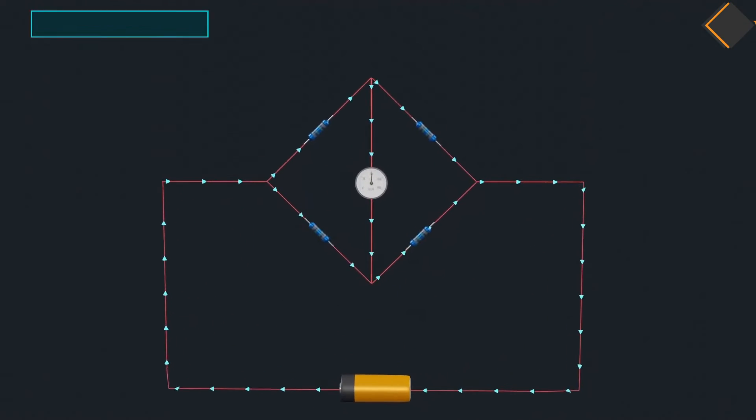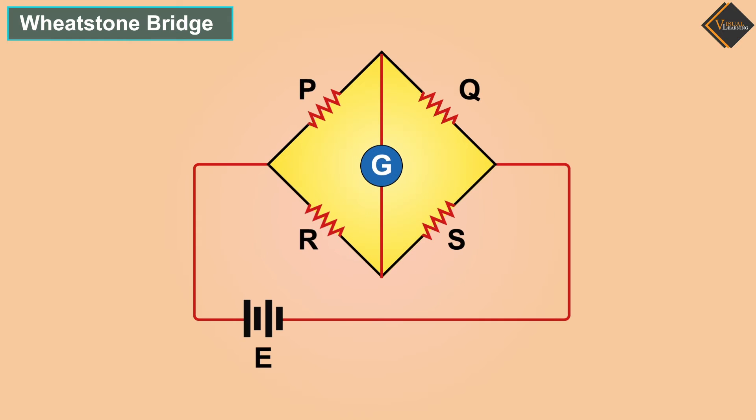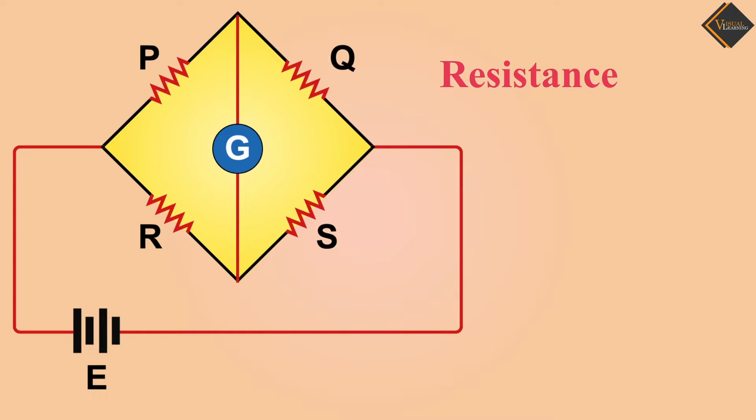In this video, we will understand Wheatstone Bridge. A Wheatstone Bridge is an electric circuit that balances two legs of a bridge circuit to calculate an unknown resistance. Wheatstone Bridge is also known as a resistance bridge.